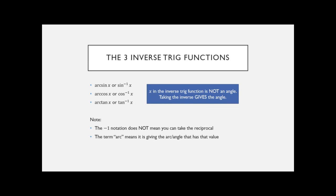It's important to know that these mean the same thing. I traditionally say 'arc' because I don't want it to get confused with taking the reciprocal. Usually a negative one exponent means reciprocal, but in this case we're not using it as a reciprocal. Sine to the negative one of x is not one over sine of x — it means the inverse sine or arc sine.